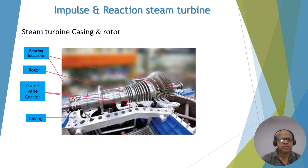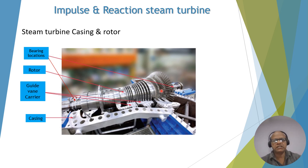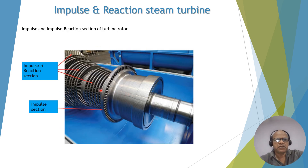This is a typical photograph showing the casing, the guide vane carrier or diaphragm, the rotor, and two bearings. These are the impulse and reaction stages. The starting stages are impulse type turbine. You can see this rotor, where the initial stage is the impulse section and later it has impulse and reaction section blades.